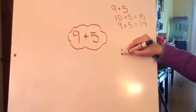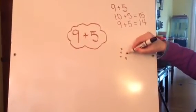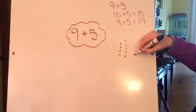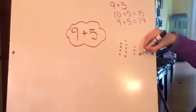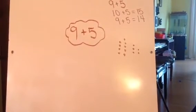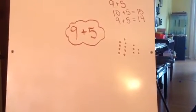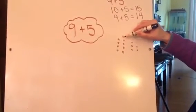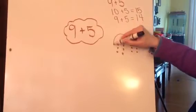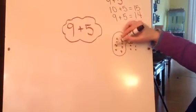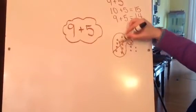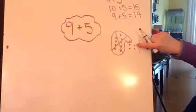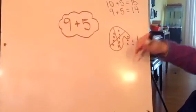I could also draw 9 dots and 5 dots. And then I could count my ones because I don't want to have too many. 1, 2, 3, 4, 5, 6, 7, 8, 9, 10. And I could trade these for a 10 and that gives me 10, 11, 12, 13, 14.